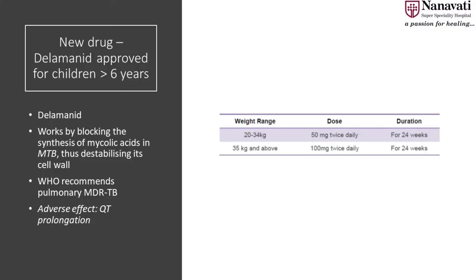Delamanid is a new drug approved for children more than six years of age; WHO says it could be used in children three years and above. It works by blocking the synthesis of mycolic acids in the cell wall of MTB. It is currently recommended only for pulmonary TB. The most important side effect is QT prolongation. It is recommended for six months in the intensive phase. In children we use 50 mg twice daily, as we rarely see children 35 kg and above.